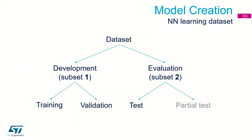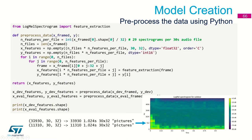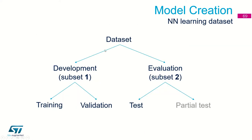This slide is important for understanding the generic idea of the neural network and learning dataset. To train the neural network we need a dataset. We have two datasets: the development dataset, which is larger, and the evaluation (or test) dataset, which is smaller. The general learning dataset has the development dataset as subset one and the evaluation dataset as subset two.